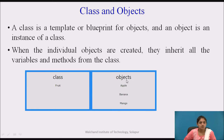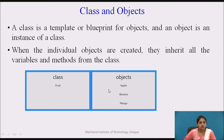For example, there is a class and there are objects. The name of the class is Fruit, and the names of the objects are Apple, Banana, and Mango. Fruit is nothing but the blueprint of the objects — it gives a general classification of what type of fruits it has. Fruit is a general classification, and the objects Apple, Banana, and Mango are members of Fruit. They inherit all the variables and methods from the class Fruit.